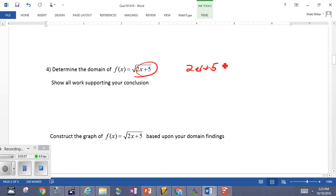2x plus 5, must be greater than or equal to 0. Because, you can't take the square root of a negative. So, we just solve that.